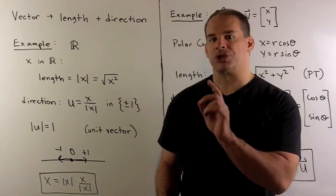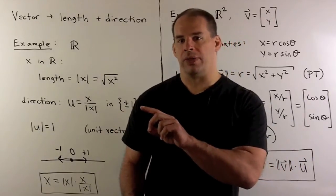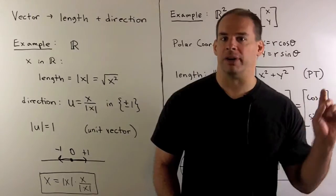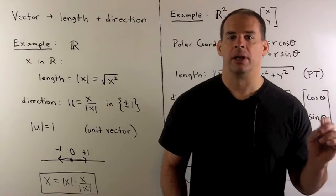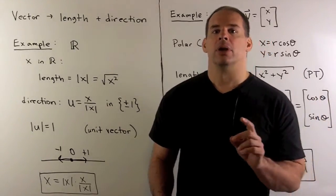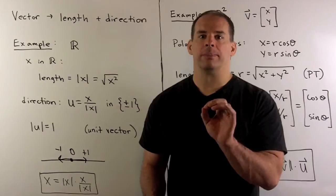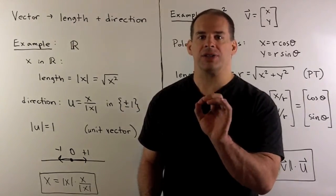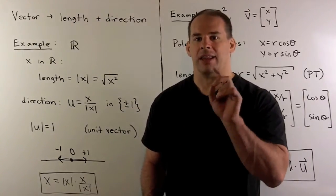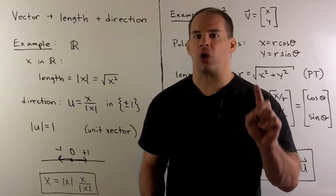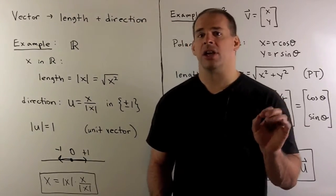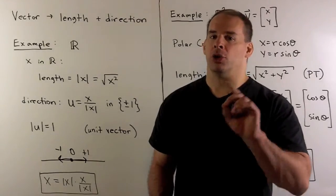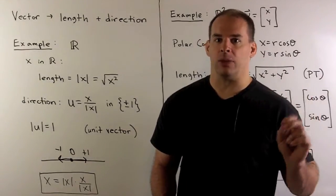Here, we'll start off with the notion of the length of a vector and work our way up to the definition of an inner product. The first concept we start off with: if we have a non-zero vector, we can always factor it as the length of the vector times a direction. In this case, direction is going to be given by a unit vector. Unit vectors are just vectors that have length equal to one.